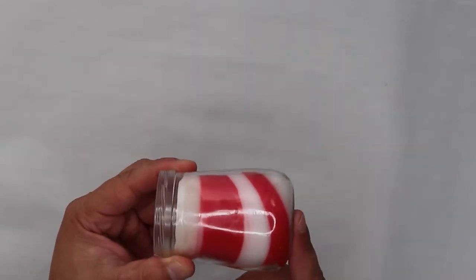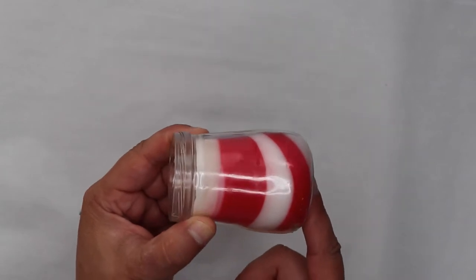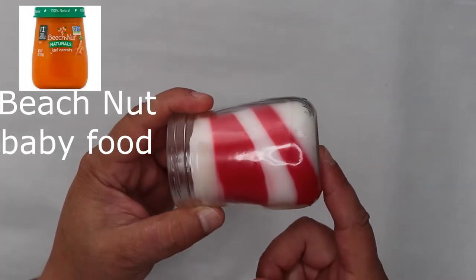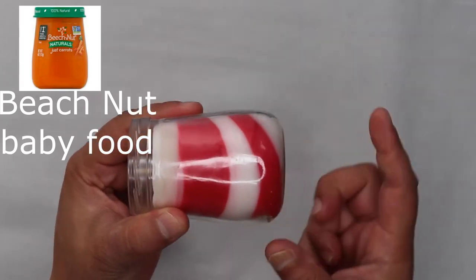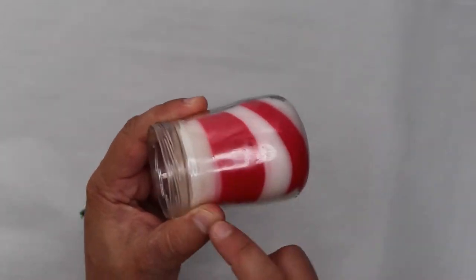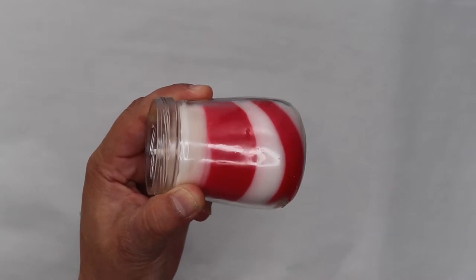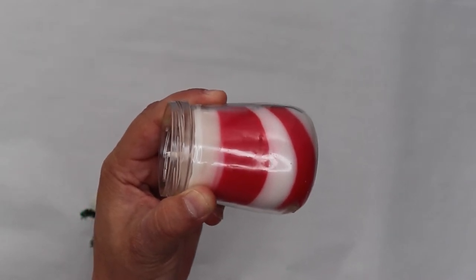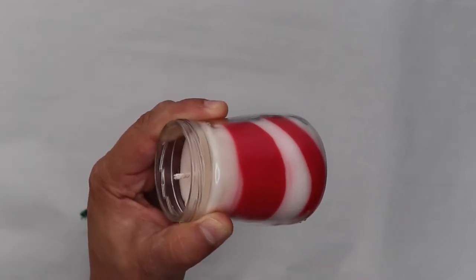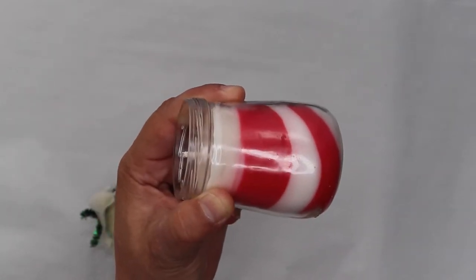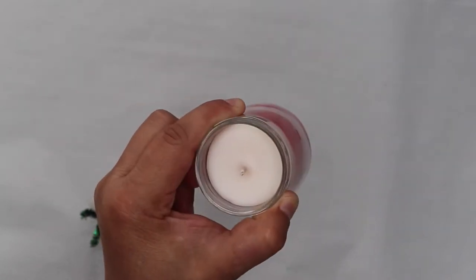For this candy cane candle, I've used a Gerber jar which I find really cute. I thought it would be the perfect size and shape for a candy cane. Now, I don't have any kids, but I do like eating Gerber. I love the banana flavored ones, so I like to reuse all the glass bottles and turn them into candles.